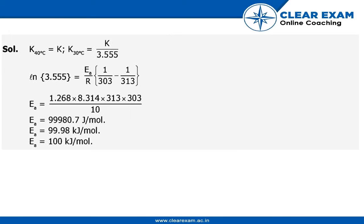At K 40 degrees Celsius we have K, and at K 30 degrees Celsius we have K upon 3.555. As we know the formula ln(3.555) equals Ea upon R into 1 upon T1 minus T2. So here 303 and 313 are the values, and after that we have to find activation energy.